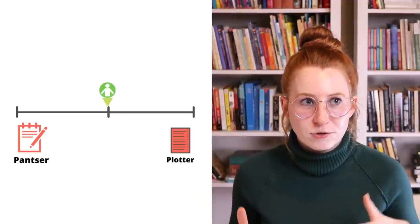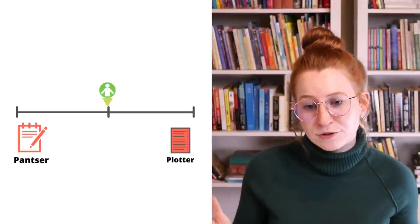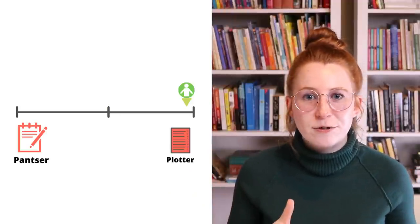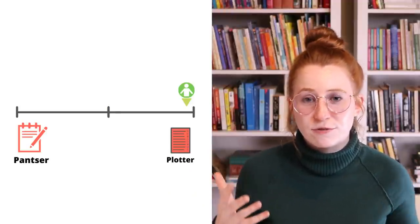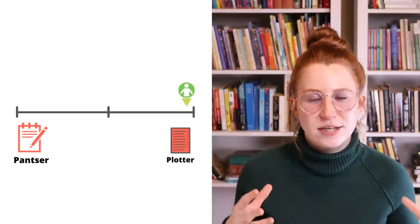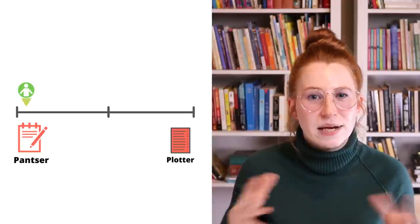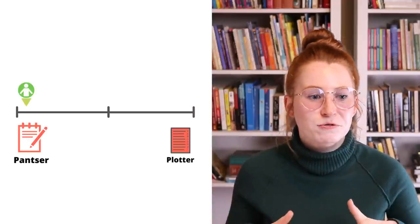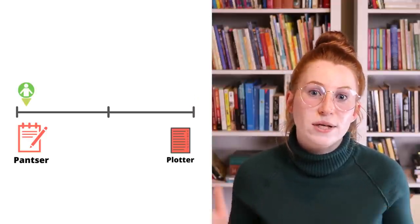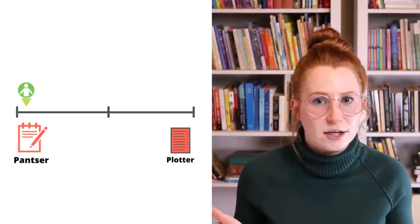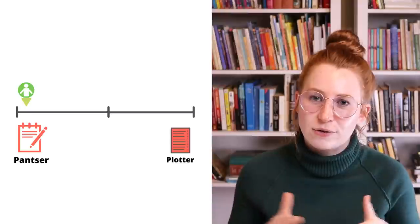But if you need a refresher on the previous video, in a nutshell the four writer types are built on two continuums. The first continuum is plotter to pantser — plotter being, of course, someone who plots their novel in advance, who figures out the structure and things like that before going into the first draft.